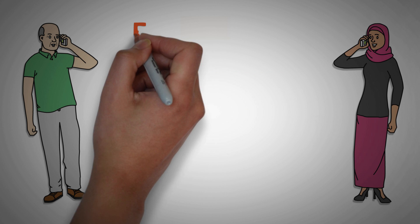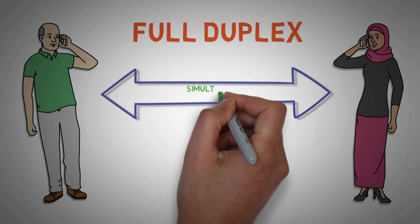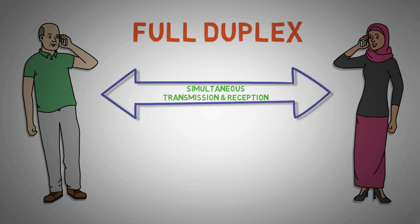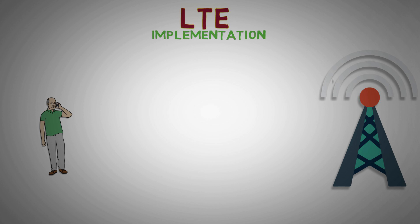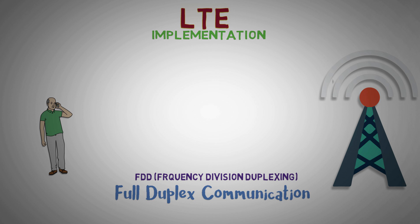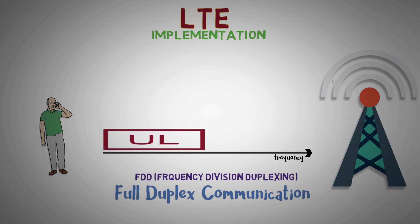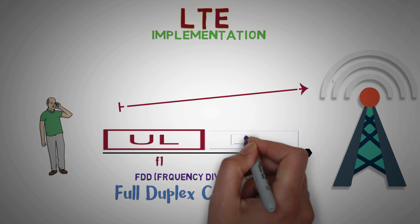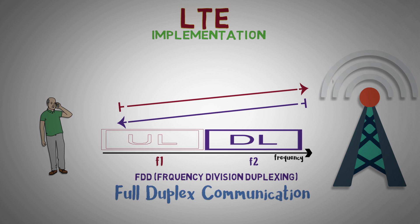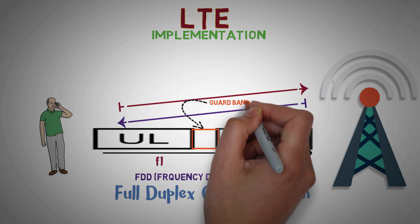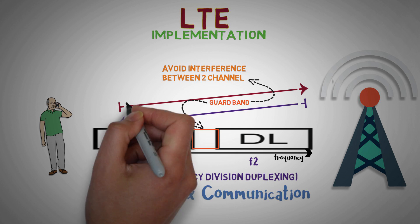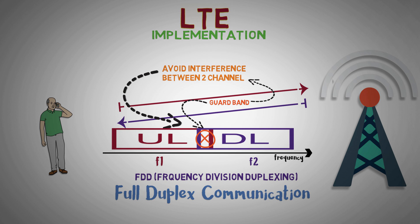The second mode of communication is full duplex. It stands for simultaneous communication between two parties, which means both parties can interact freely. Now let us see how it is implemented in LTE, long-term evolution. Frequency division duplexing, FDD, is a method for establishing a full duplex communications link that uses two different radio carrier frequencies for transmitting uplink and receiving downlink. Both channels are separated by a defined offset frequency, also known as a guard band, to stop interference between the uplink and downlink channels.